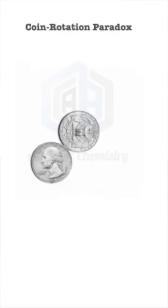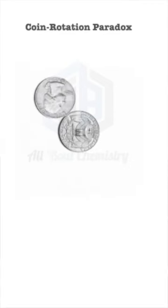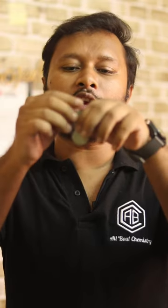There was a recent question in a CSI NET exam in which it was asked: if you have two coins of the same size, coin A and coin B, where coin A is not moving but coin B is rotating along the circumference of coin A such that it covers the whole circumference and comes back to the same position where it started — how many rotations on its own axis does coin B make?